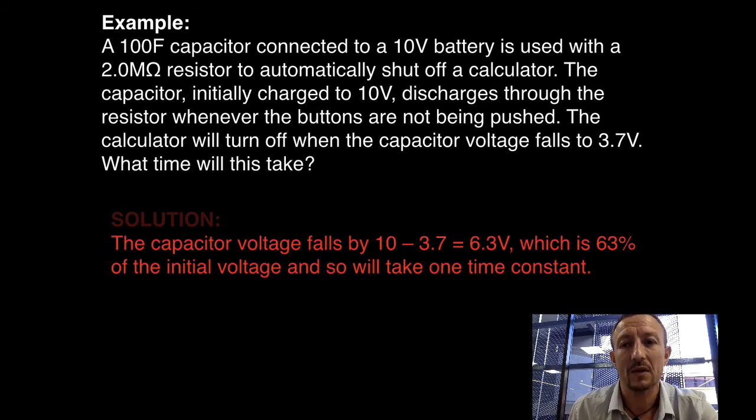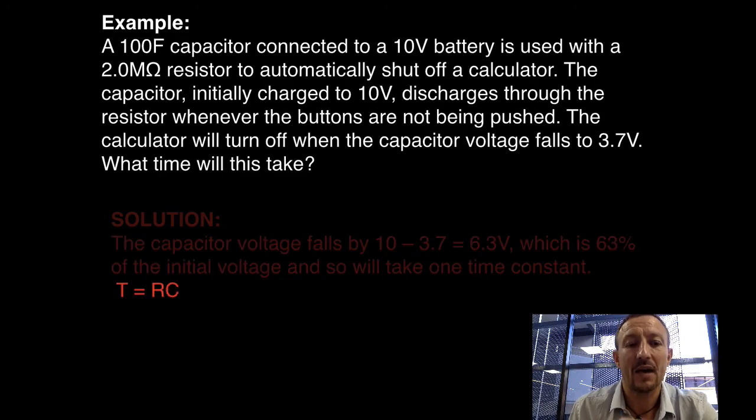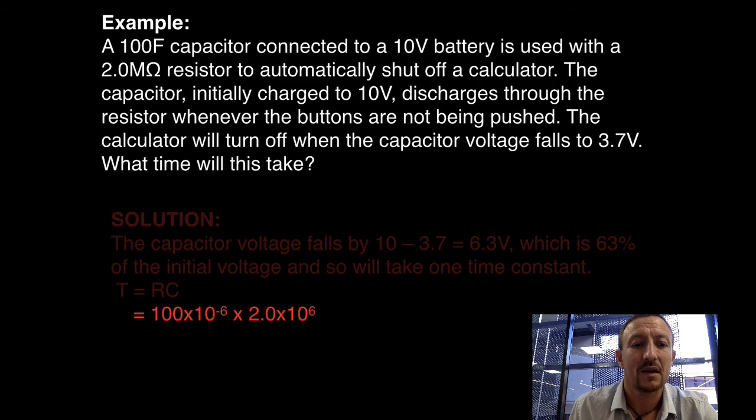This is 63% of the initial voltage, and as a result will be one time constant. Remember back to what we said, one time constant is always 63% of what you're either trying to achieve, or what you're starting with. So we know that tau equals RC. We know that RC is 100 times 10 to the negative 6 microfarads. It's a pretty big capacitor if it was a 100 farad capacitor in a calculator.